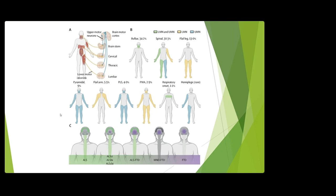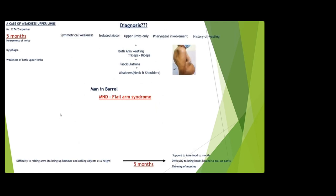In this case it was a difficult case. The final diagnosis is man-in-barrel motor neuron disease — flail arm syndrome. How does it differ from classical ALS? In ALS there will be both upper and lower motor neuron signs. Flail arm syndrome has a better prognosis than classical amyotrophic lateral sclerosis.